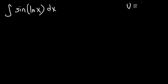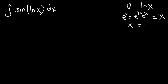We're going to say u is equal to ln x. If we do that, that means e to the u is equal to e raised to the ln x. Because the base of e and the base of natural log are the same, e to the ln x is simply equal to x. Now if x is equal to e to the u, then dx is going to be the derivative of e to the u, which is e to the u times du. So we're going to replace the natural log of x with u, and replace dx with e to the u du.